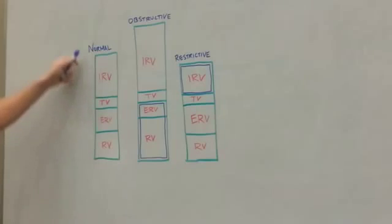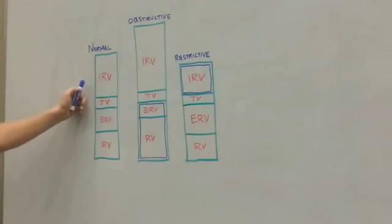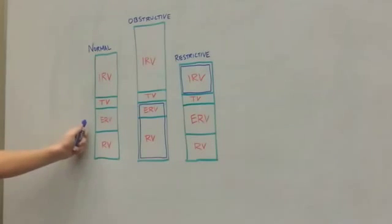As you can see, I've made subcategories inside the diagram for normal respiration, indicating the different subsections of total lung capacity: inspiratory reserve volume, tidal volume, expiratory reserve volume, and residual volume.